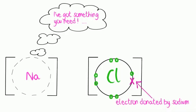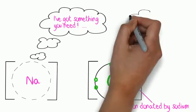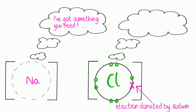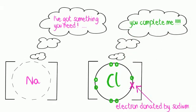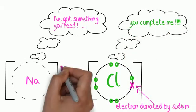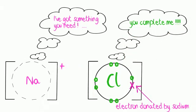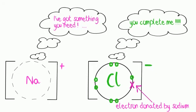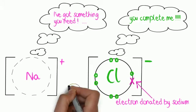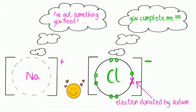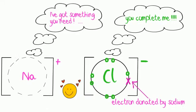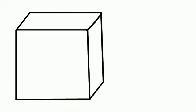Ionic compounds are giant structures, held together by strong electrostatic forces of attraction between the oppositely charged ions. These electrostatic forces act in all directions in a giant three-dimensional lattice of positive and negative ions.